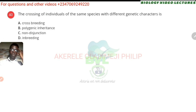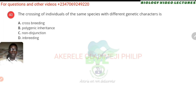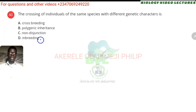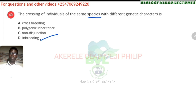It's called inbreeding because you're using the same species. Crossbreeding is like using different species. The crossing of individuals of the same species with different genetic material is inbreeding.